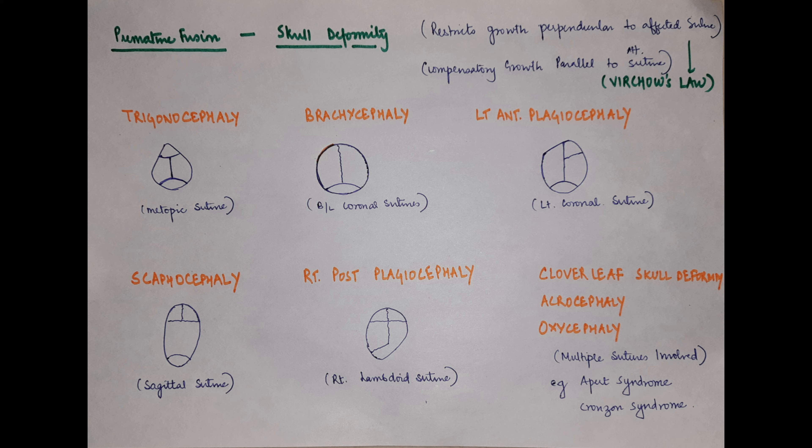Multiple sutures may fuse at the same time — coronal, sagittal, lambdoid, all together — and we can get skull deformities like a cloverleaf-shaped skull, acrocephaly, or oxycephaly. This type of involvement of multiple sutures is usually associated with syndromes, very commonly Apert, Crouzon, Pfeiffer, Carpenter, and others.